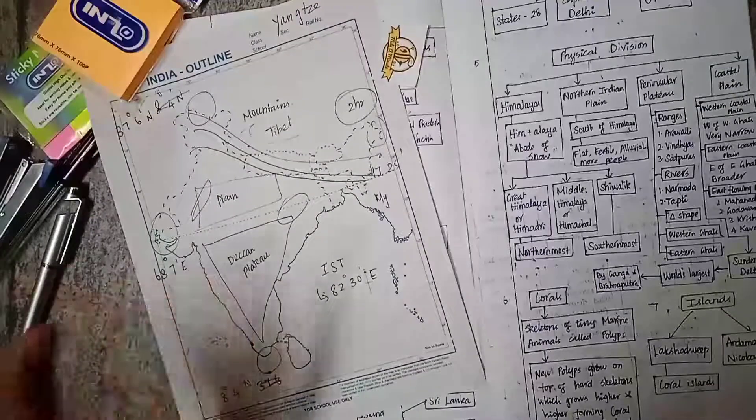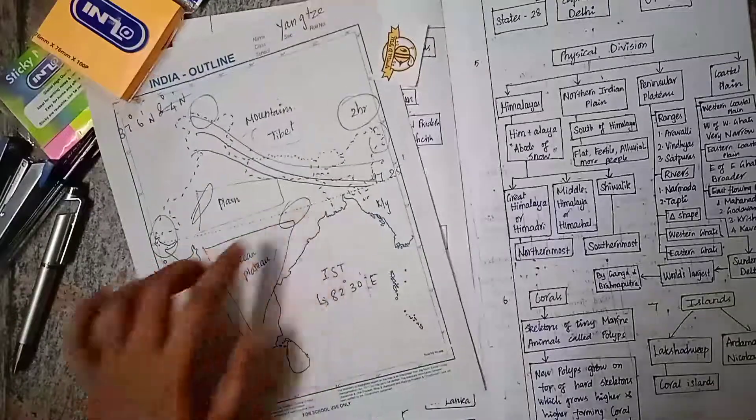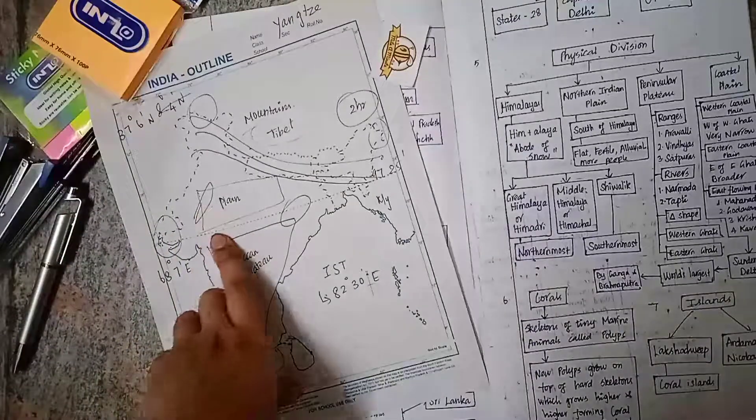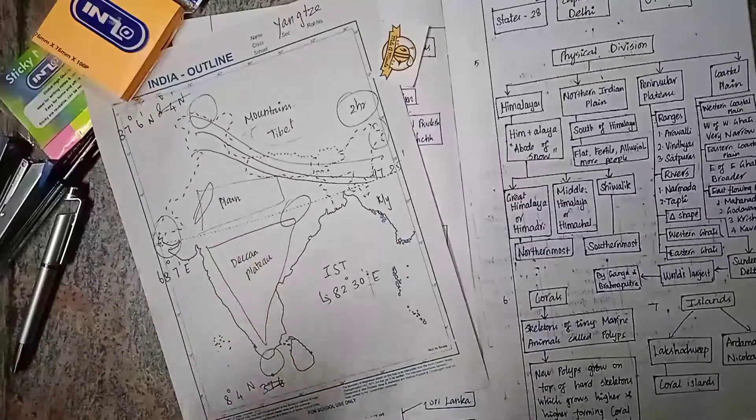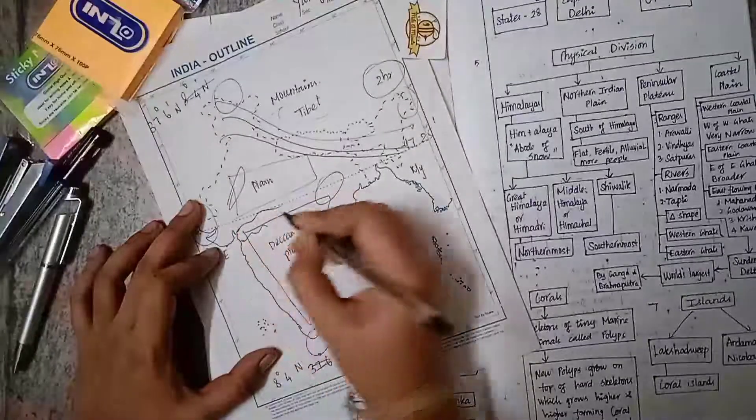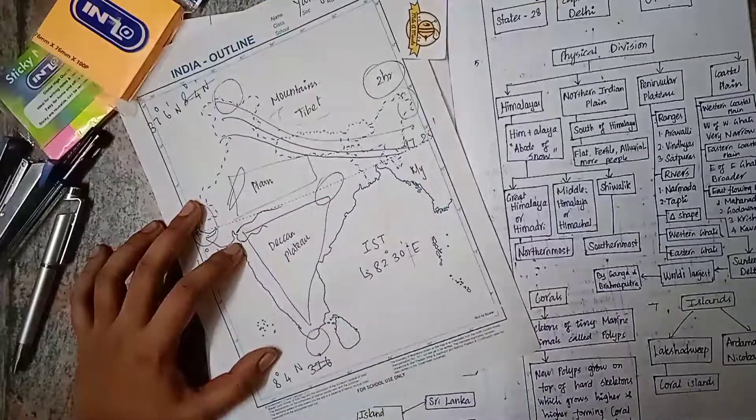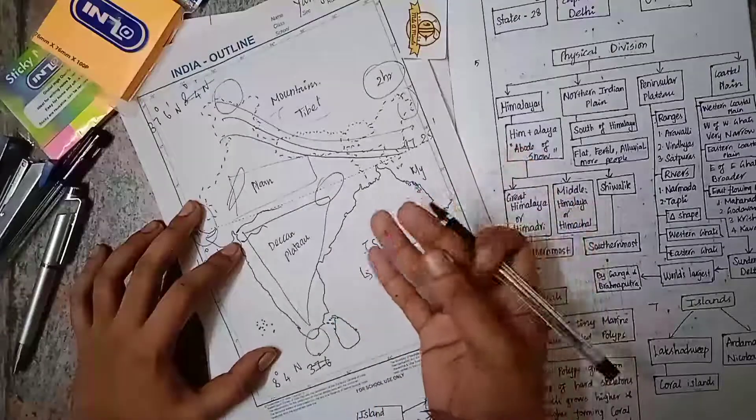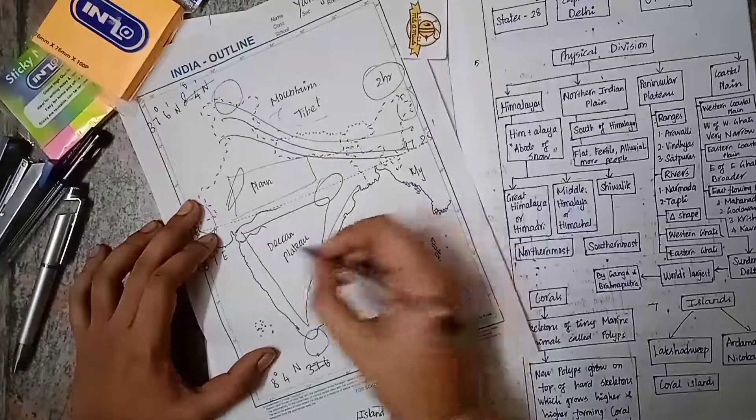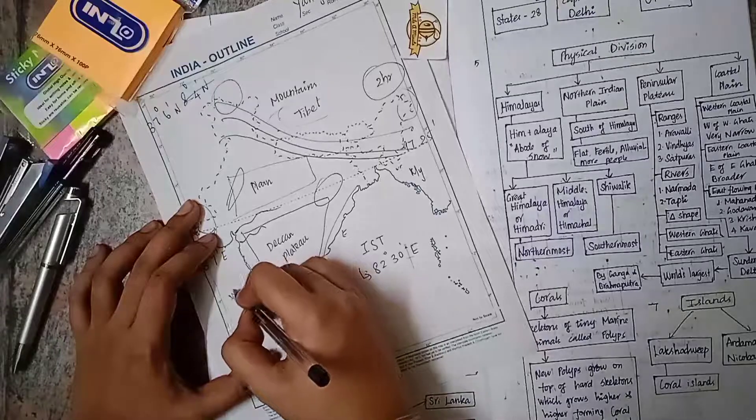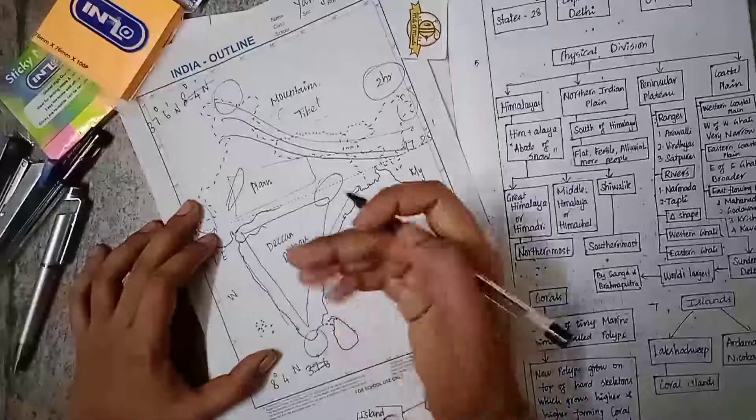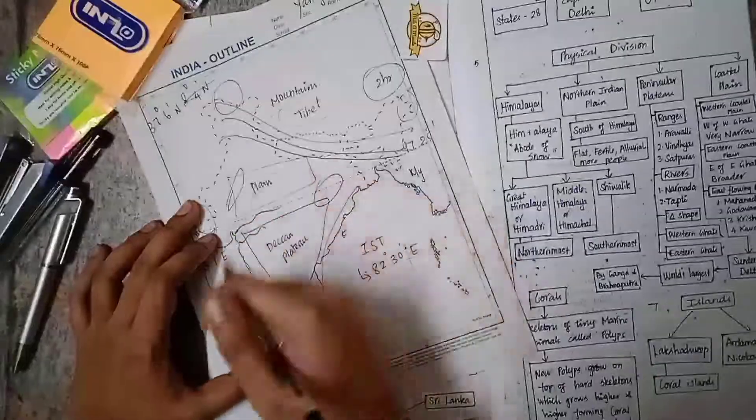We have the Peninsular Plateau. A portion of it is called Deccan Plateau and Chota Nagpur Plateau. This plateau contains many ranges like Aravalli, Vindhya, and Satpura. The plateau also has many rivers: the west-flowing rivers are Narmada and Tapti, while the east-flowing rivers include Mahanadi, Godavari, Krishna, and Kaveri. We have Western Coastal Plain and Eastern Coastal Plain.